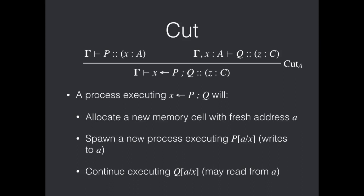So, first we'll look at cut. A process running this cut, this x left arrow P semicolon Q, should be read as something like spawn P and continue as Q, will first allocate a new memory cell with a fresh address A. It'll spawn a new process executing P, which is going to write to A. And it will continue executing the process Q, which is permitted to read from A, but again, is not required to.